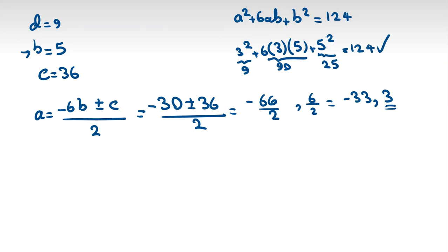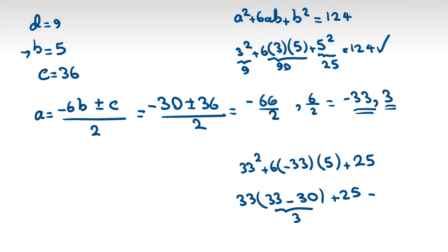And if you check for negative 33: a is negative 33, which gives 33 squared plus 6 times negative 33 times b which is 5, plus b squared which is 25. If we factor from 33, it will be 33 times 33 minus 30 is 3 plus 25. It will be 99 plus 25, which again equals 124. Okay, so we proved we have infinitely many answers.